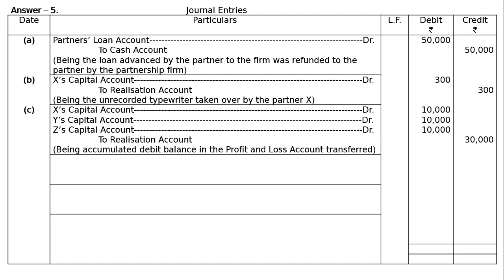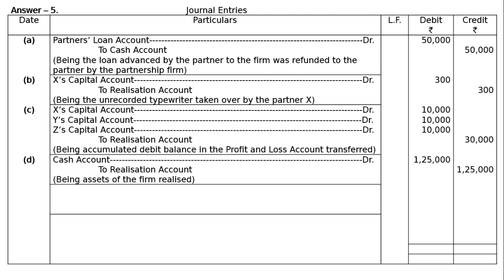Part D: Assets of the firm realized rupees 1,25,000. Entry: Cash Account debited rupees 1,25,000 to Realization Account rupees 1,25,000, being assets of the firm realized.